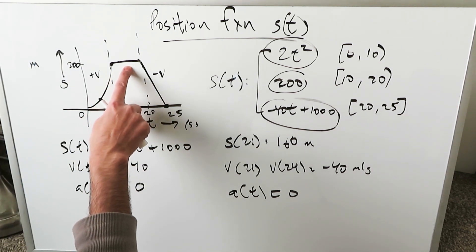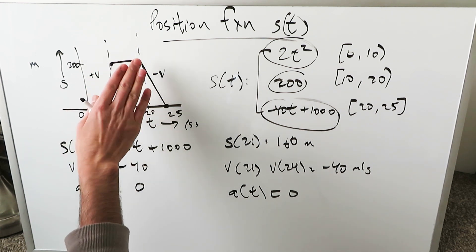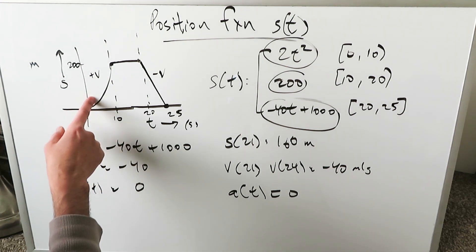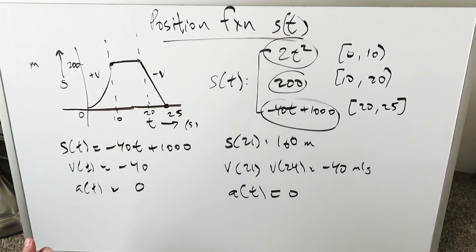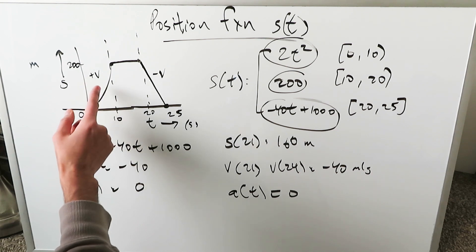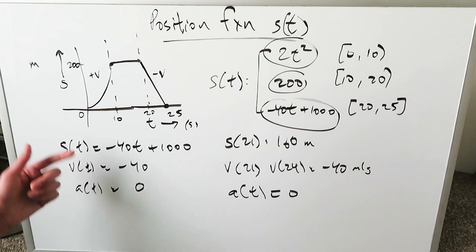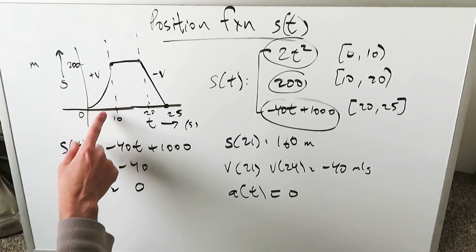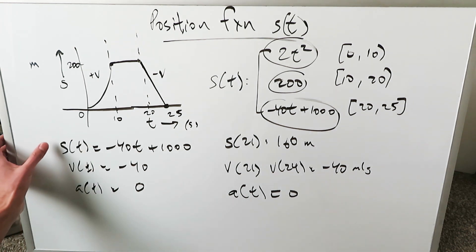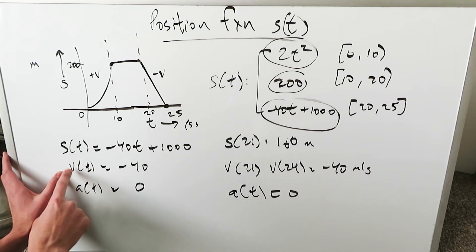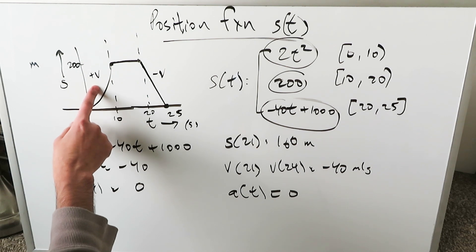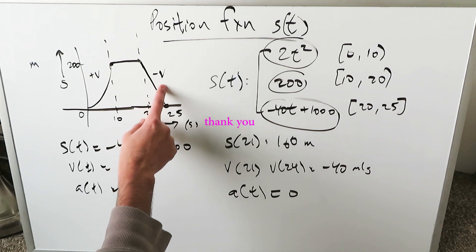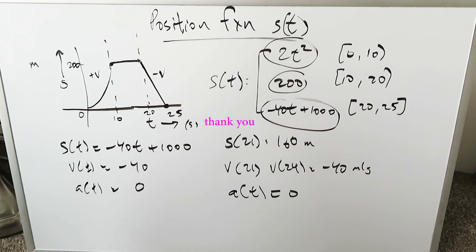In the 10-to-20 interval, the object did not move — position was constant at 200 meters from rest, with no velocity and no acceleration. In the 0-to-10 interval, the object moved in a parabolic manner away from rest, velocity became a linear function with a constant slope, and because velocity was changing, there was a constant acceleration shown by a horizontal function. When you have these types of questions, examine your position function, do its derivative to get velocity, do it again to get acceleration, and based on the type of functions you have, determine what analysis is needed. Thank you — have a good day.